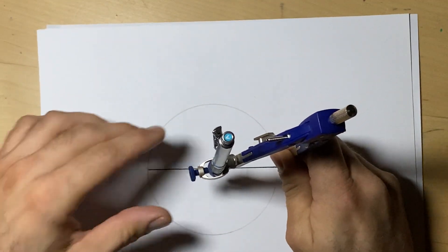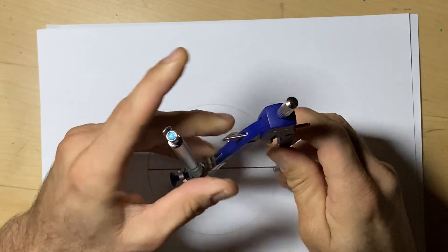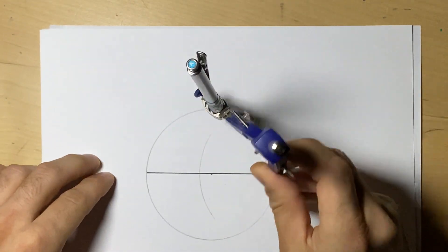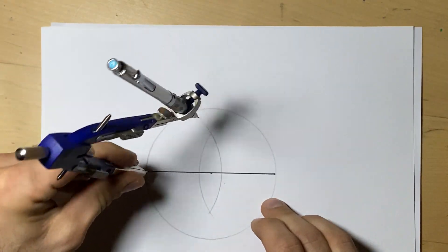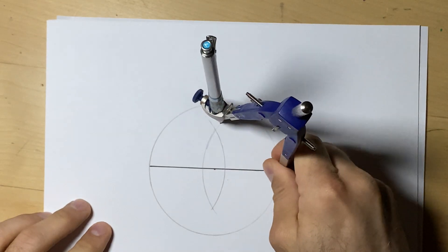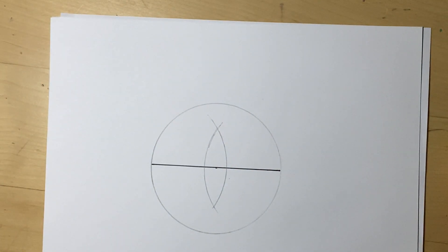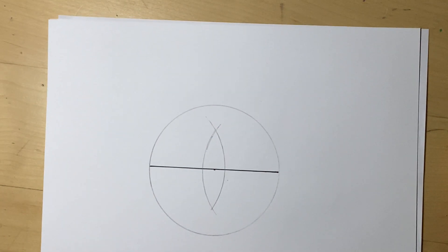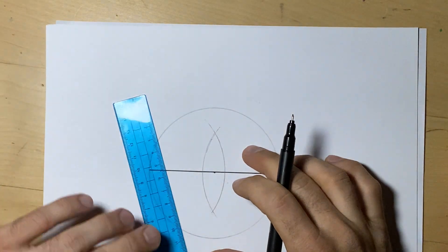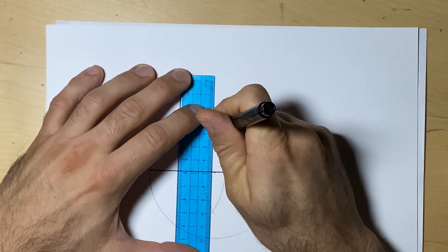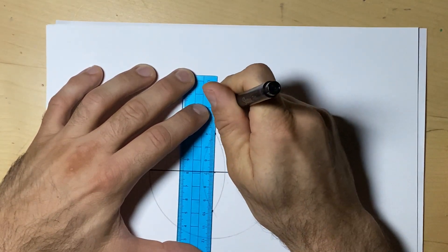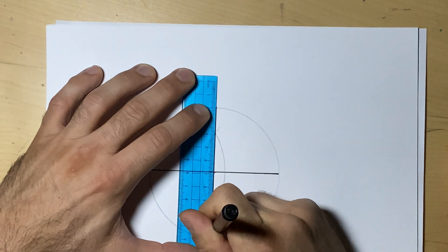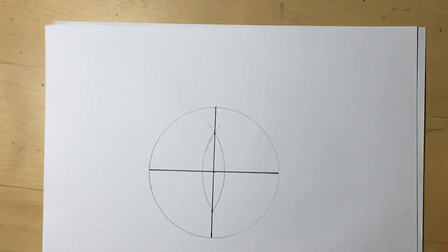I'm going to bisect the line by going a little bit past the middle, draw an arc, go to the other side and repeat it. Now we've got the markings to bisect, or cut the line in half, at a 90-degree angle. It's called a perpendicular bisector. So I'm going to cut that line in half. What I have now is a very important structure.